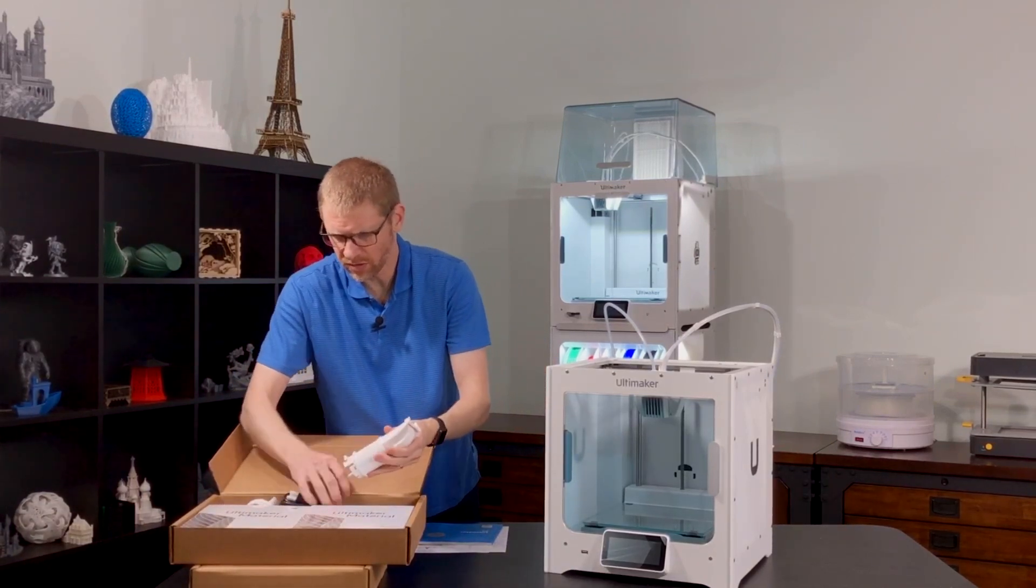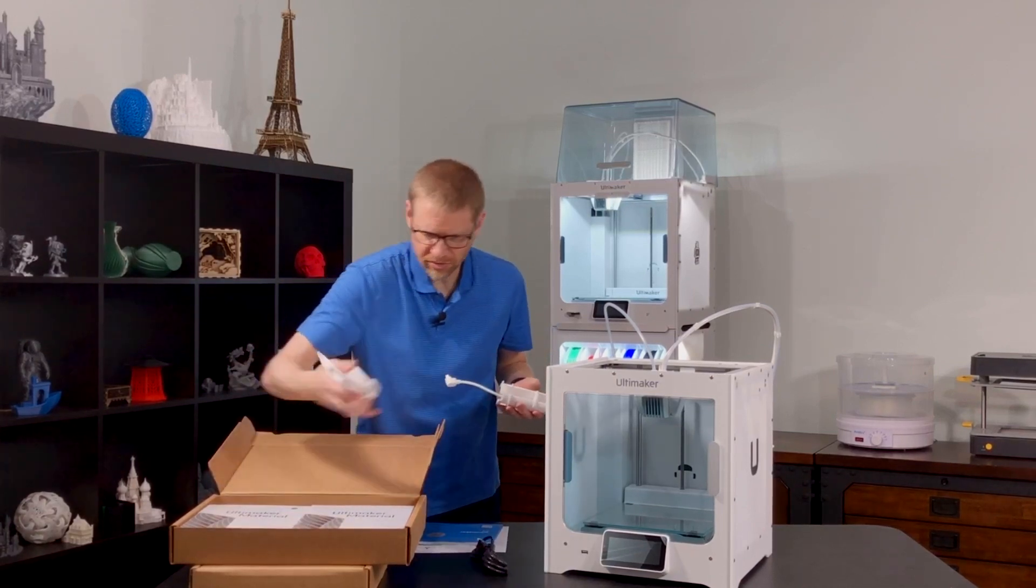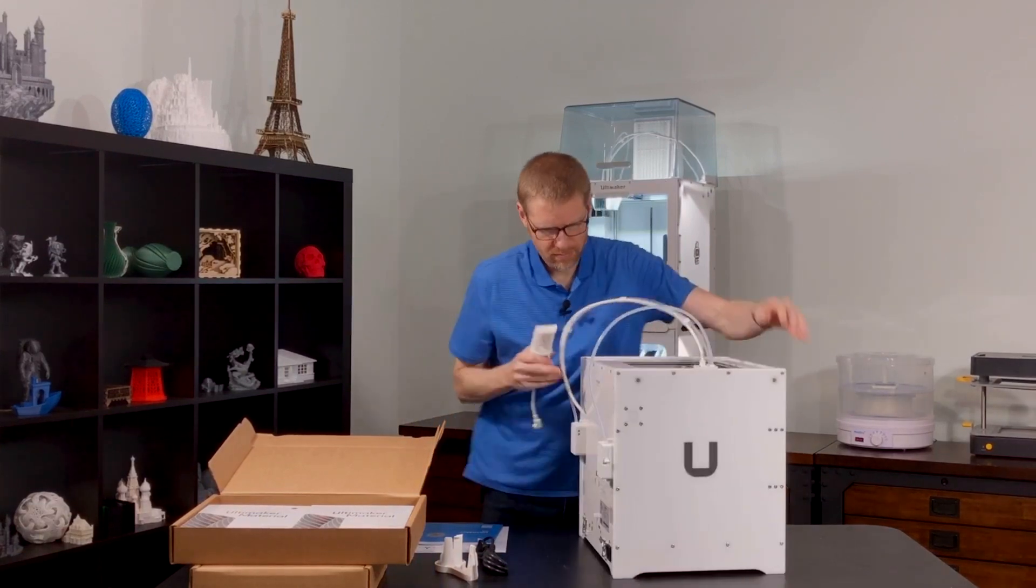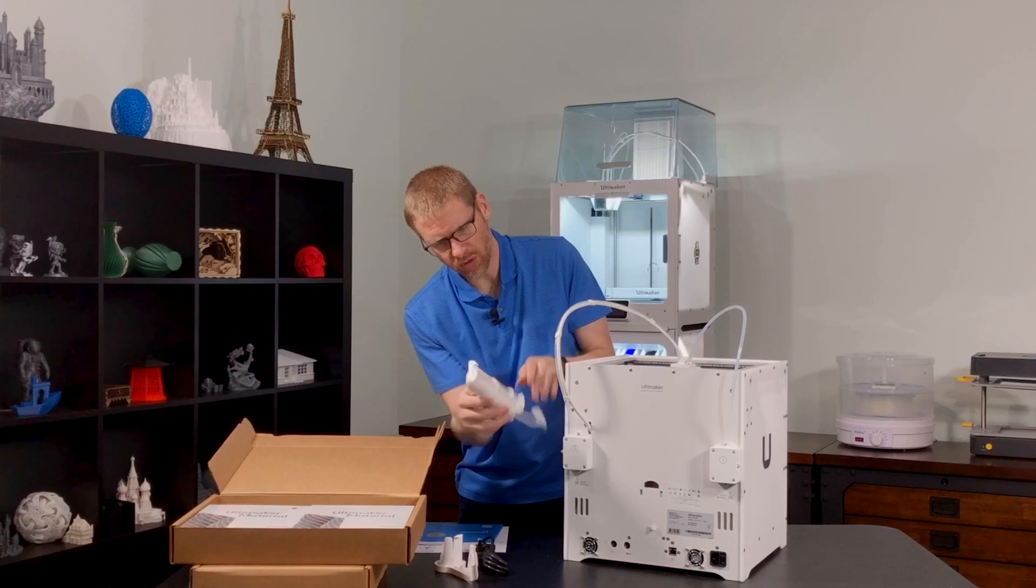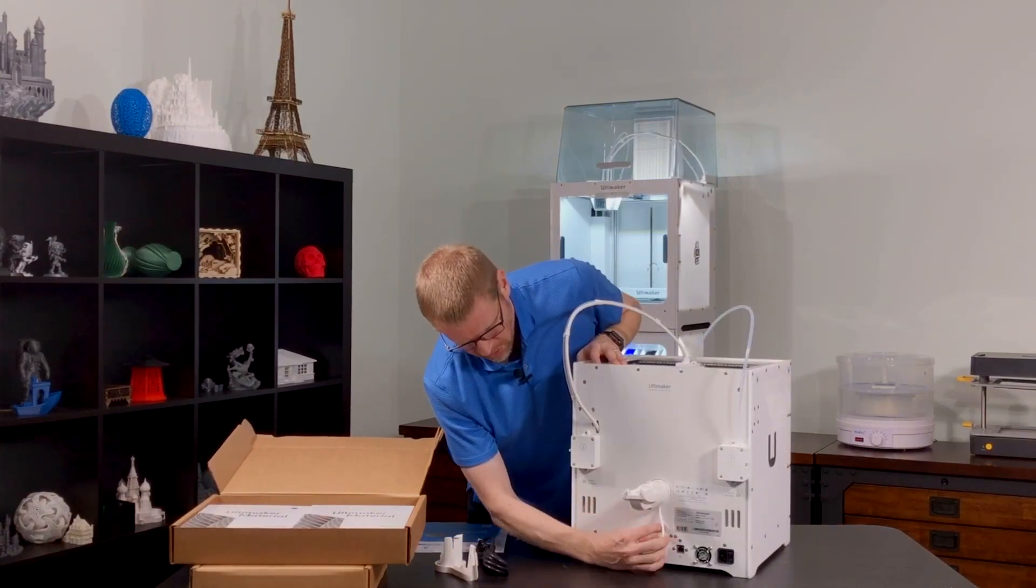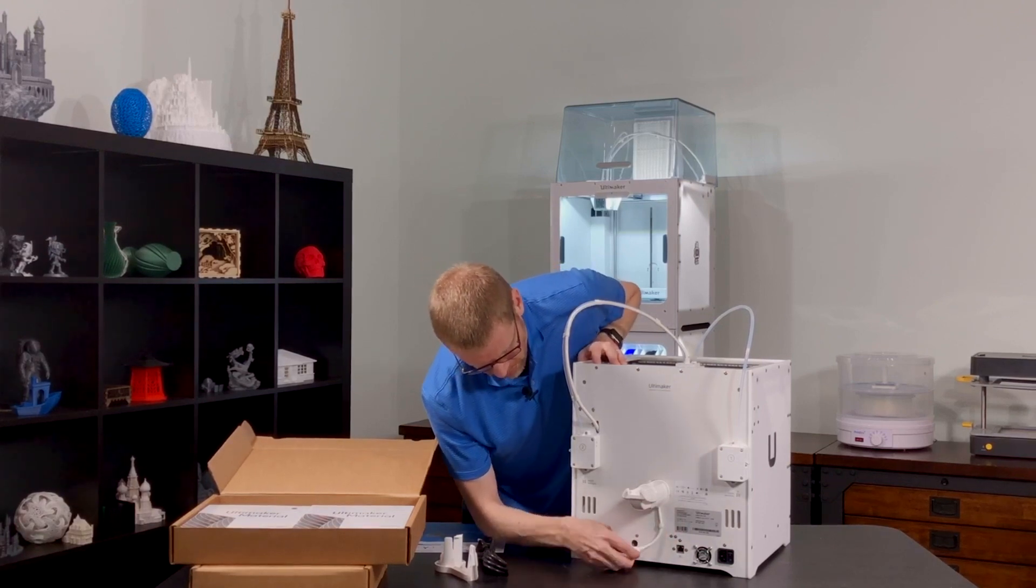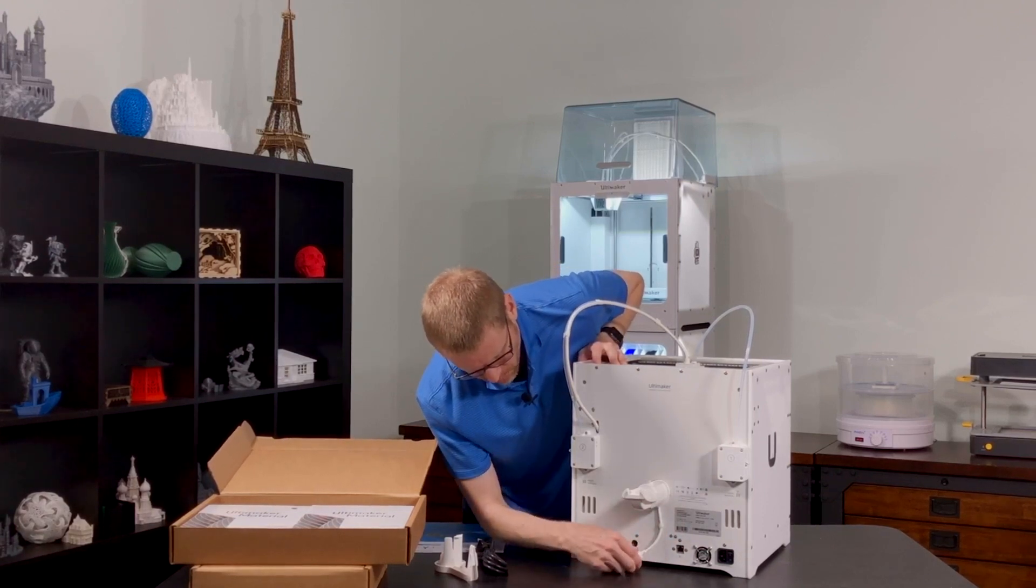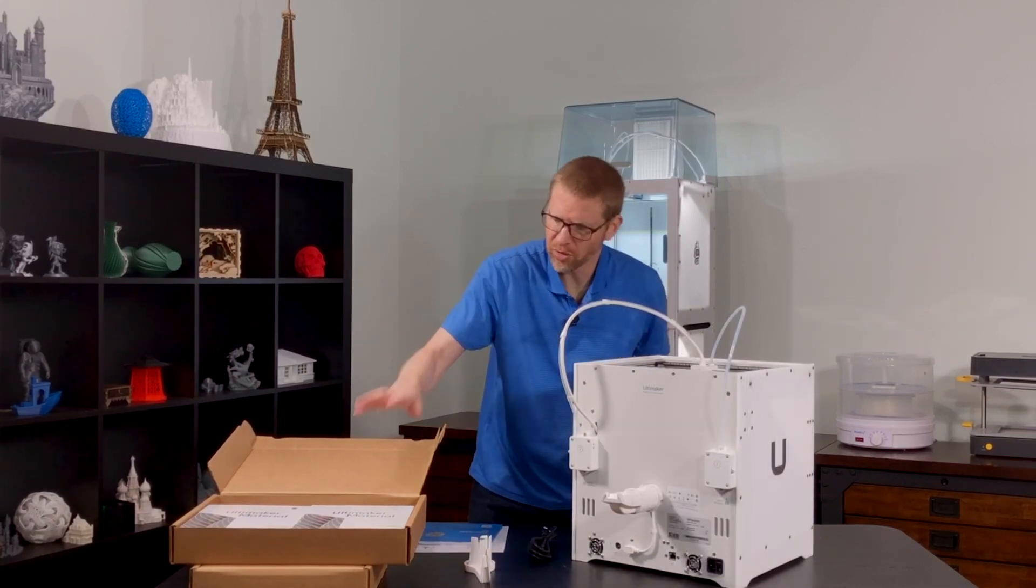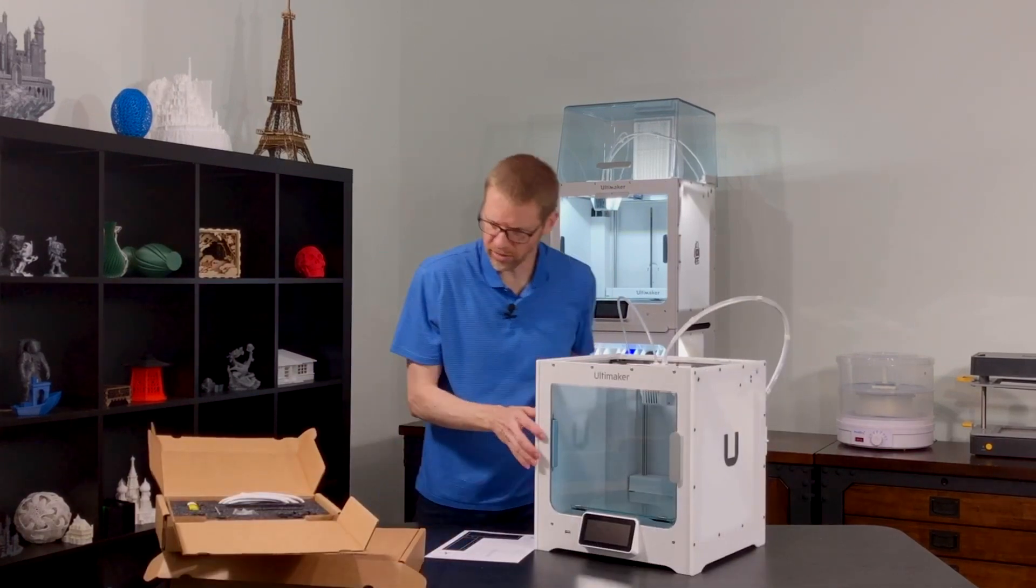Let's get our spool holder. Get the power cable out and the filament guide arm. The spool holder just goes right on the back here. Then there's a plastic clip that holds the NFC cable in place. And then that plugs into the NFC port in the back. The filament guide arm goes on the spool itself when you load the material, so we don't need that yet. Now we're ready to go ahead and plug it in and get started.